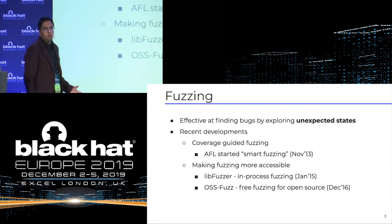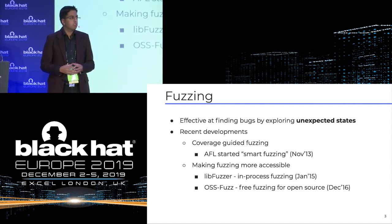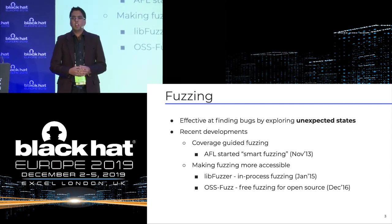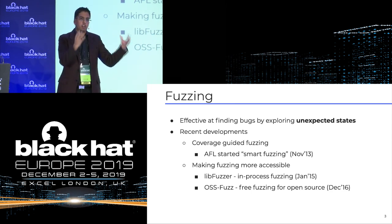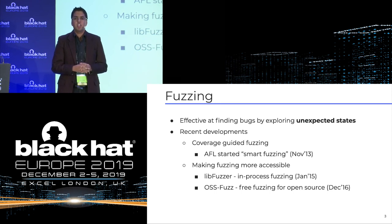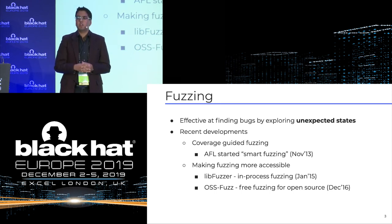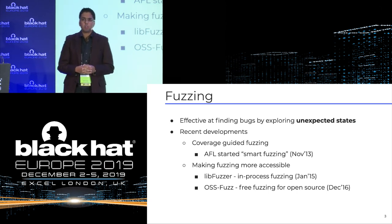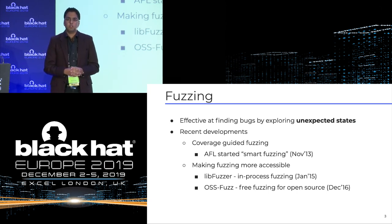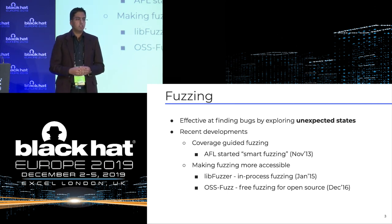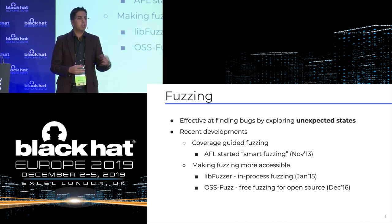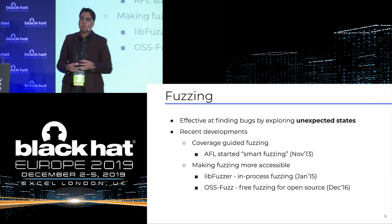So why do we do fuzzing? Fuzzing is a really interesting way to find bugs. Think of it like pushing a program so hard that it just falls off a cliff into an unexpected state. This really turns up interesting memory corruption issues. Fuzzing really became prominent in 2013 when American Fuzzy Lop, or AFL, launched — an effort by Michael Zielinski during his time at Google.